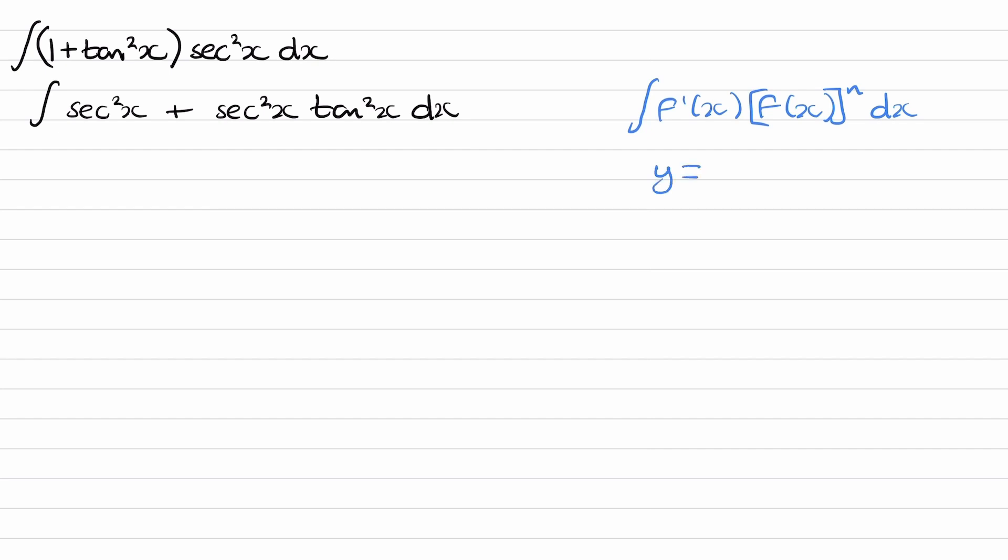So remember that what we do when we have a scenario like this is we consider f(x) to the power of n+1, which in this case would be tan³x. This tan³x should differentiate to make what we have over here. It may be off by a constant, so now we will differentiate this to figure out what that constant would be.